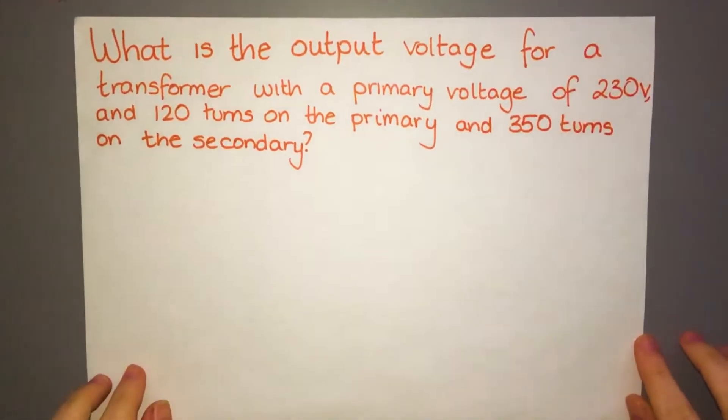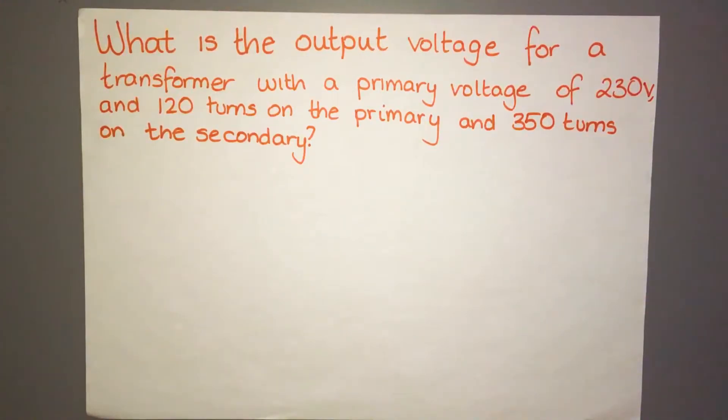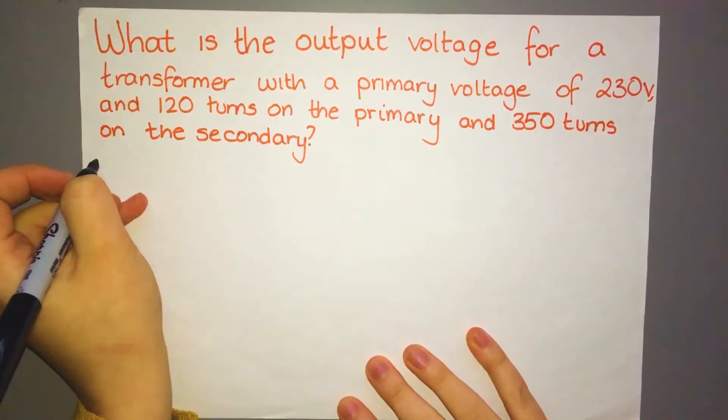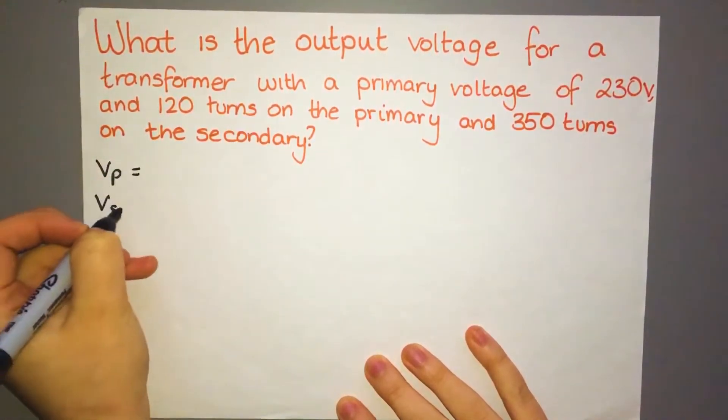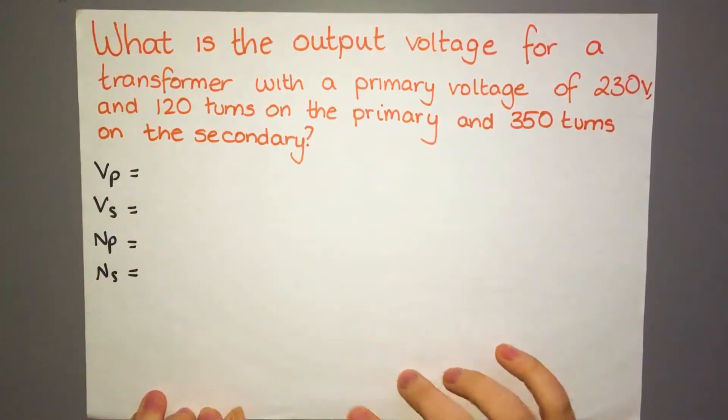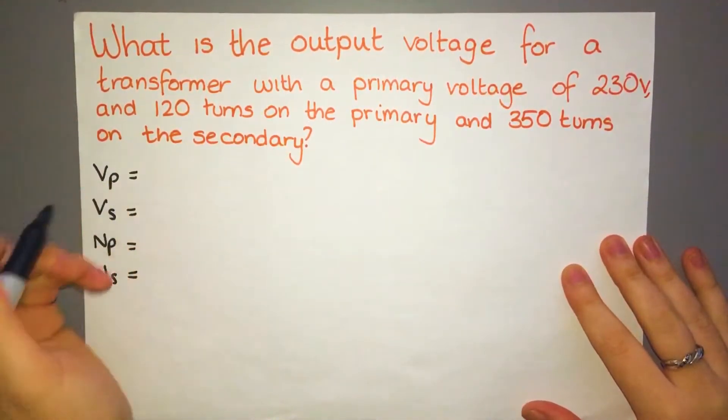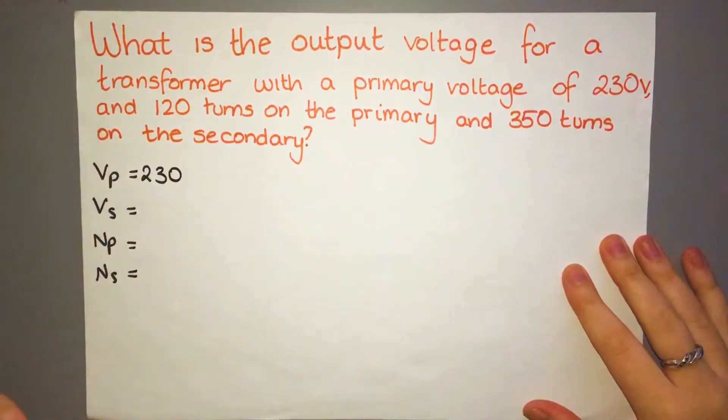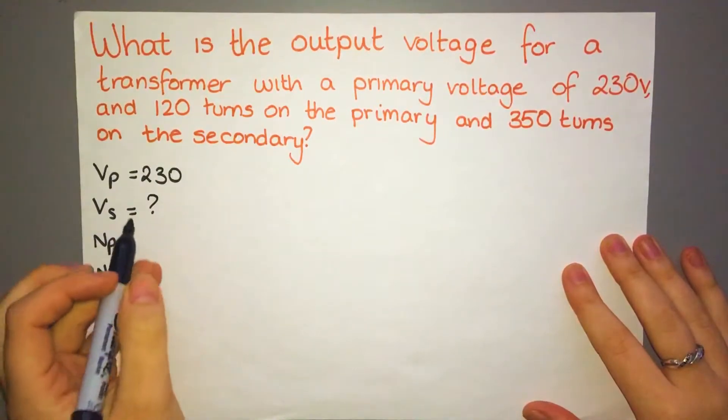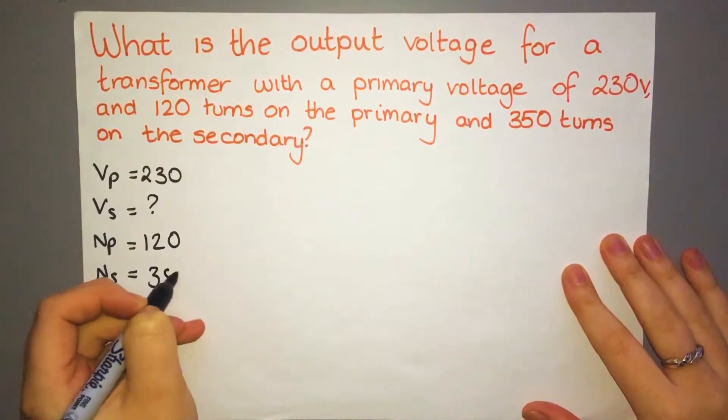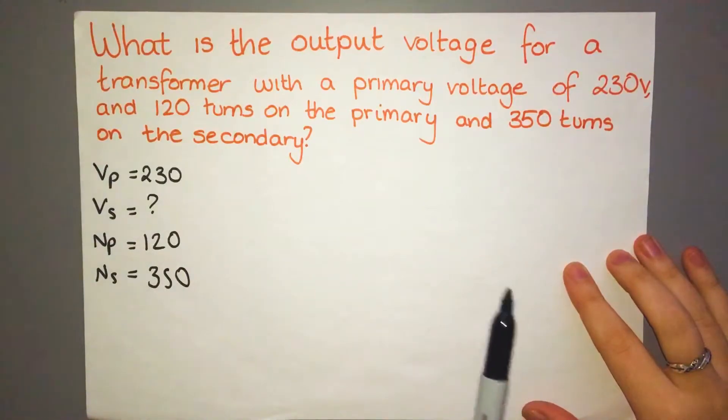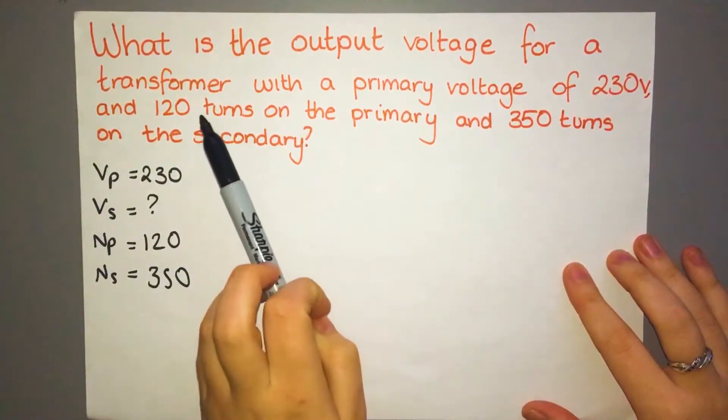So I've got an exam style question here for you. What is the output voltage for a transformer with a primary voltage of 230 volts, 120 turns on the primary and 350 turns on the secondary? So it's a really good tip to write out what we already know. So you've got VP, VS, NP, NS because that's the equation that we need. So our initial voltage, our primary voltage going in is 230. We're trying to find out what our output is. The number of turns on our primary is going to be 120 and the number of turns on our secondary is 350. Now immediately you should know that your answer is going to have a bigger voltage coming out because there's more turns on our secondary coil than there is in our primary one.